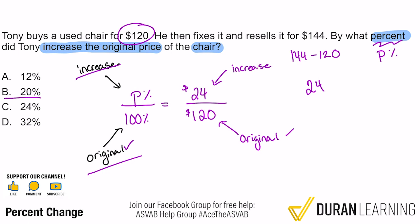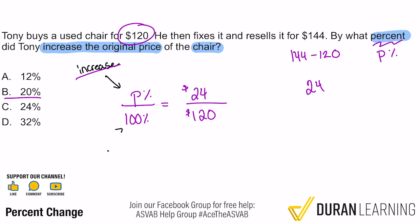On one side we have the dollar amounts, the other side we have percents. That's going to allow us to cross-multiply and divide, and we're done. Before doing that, we can go ahead and simplify first. I always recommend simplifying before you cross-multiply and divide with proportions.